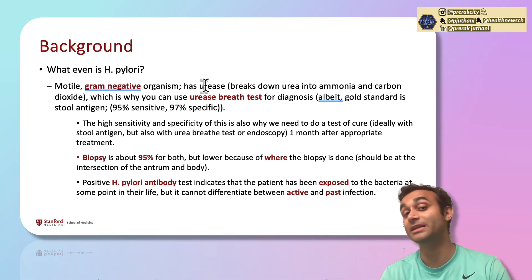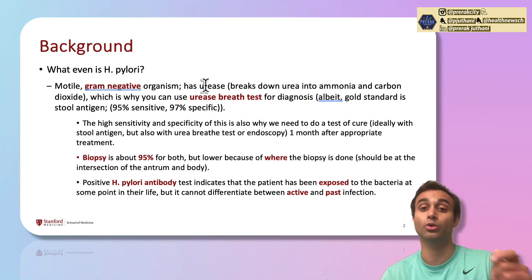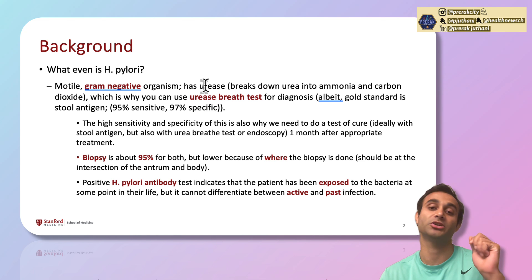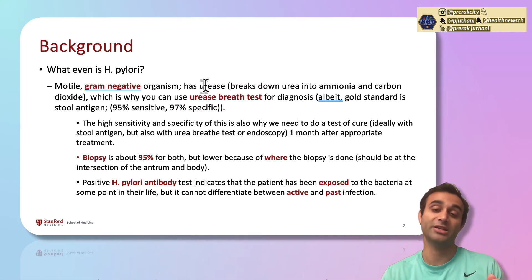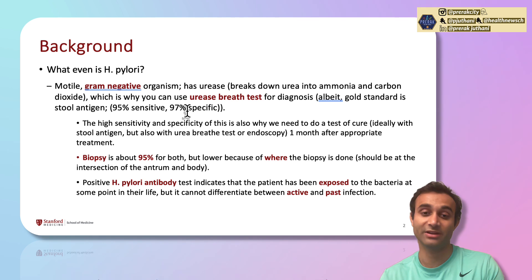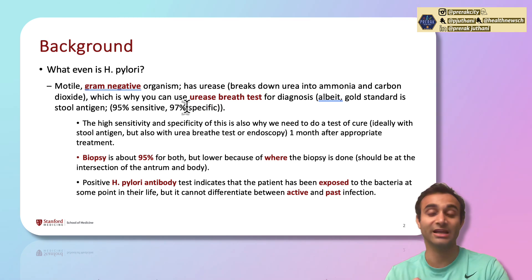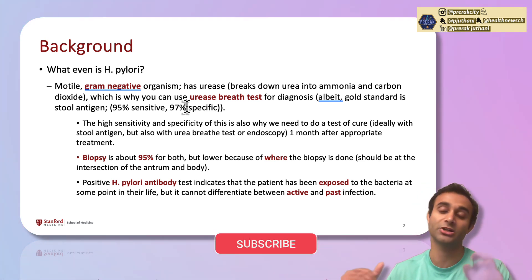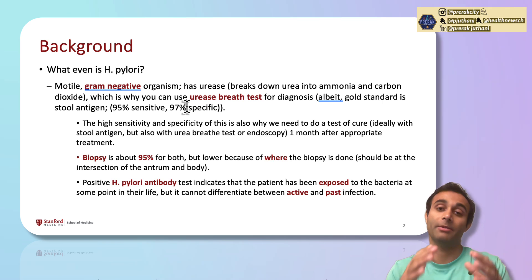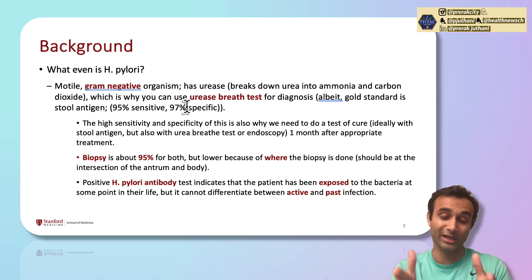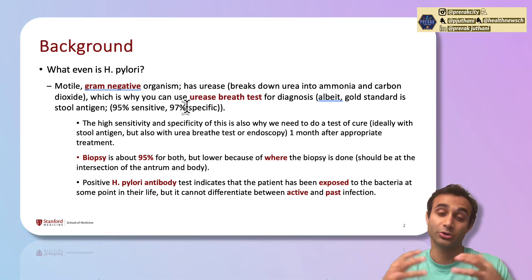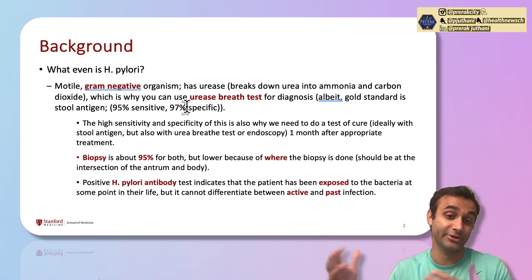However, the best way to diagnose H. pylori is actually with a stool antigen test — you check a patient's stool for an antigen that relates directly to H. pylori. This test is very sensitive and very specific, meaning if it's positive, you can be pretty sure you have H. pylori, and if it's negative, you can be pretty sure you don't. Very few tests have such high sensitivity and specificity, but the stool antigen test for H. pylori does, which is why it's considered a gold standard test.